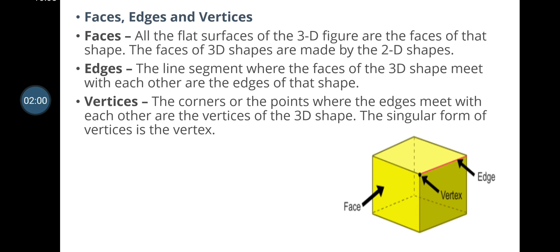Next, edges: the line segment where the faces of a 3D shape meet with each other are called the edges of the shape. In the figure, the red color lines denote the edges — where two faces come and meet.